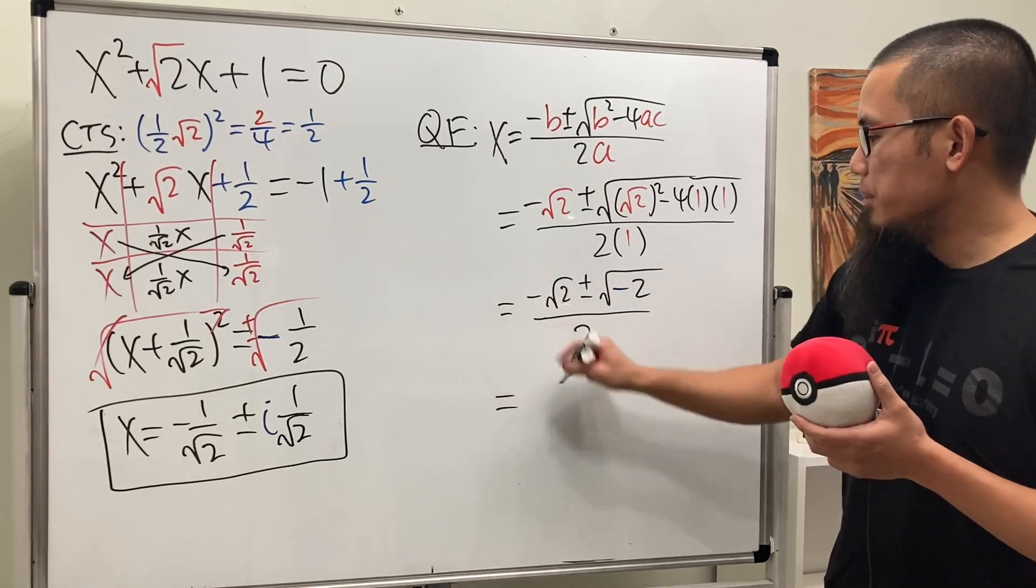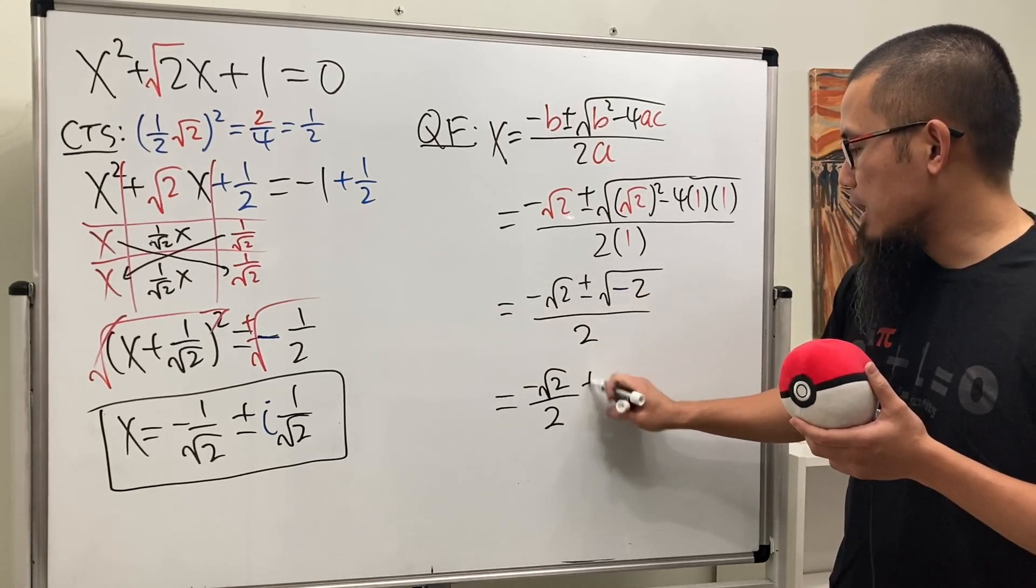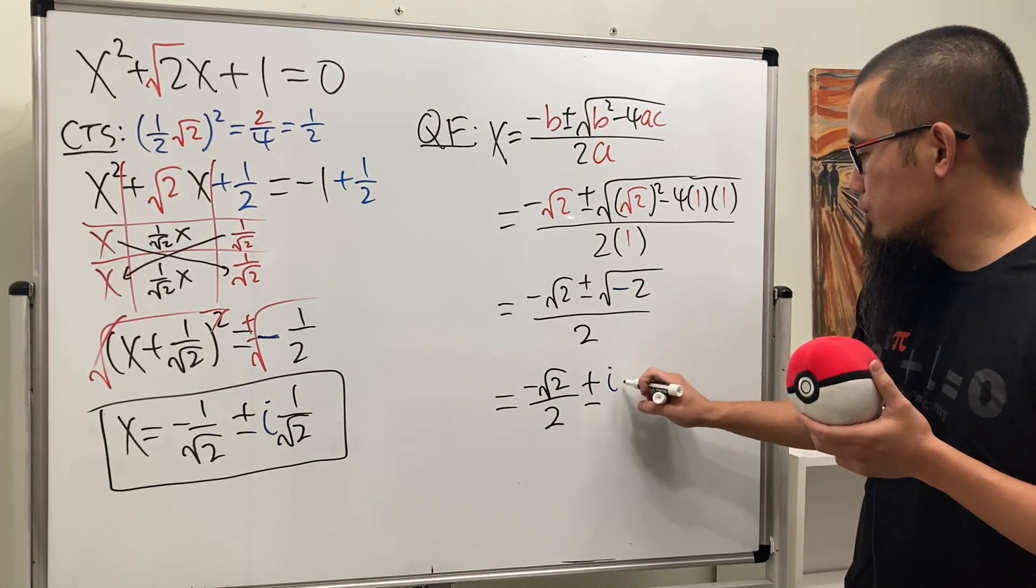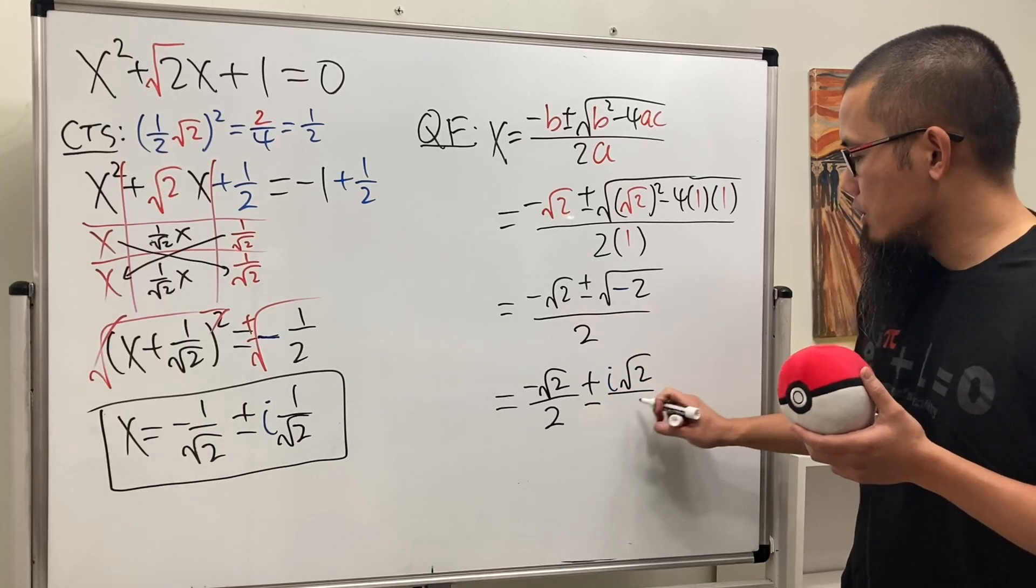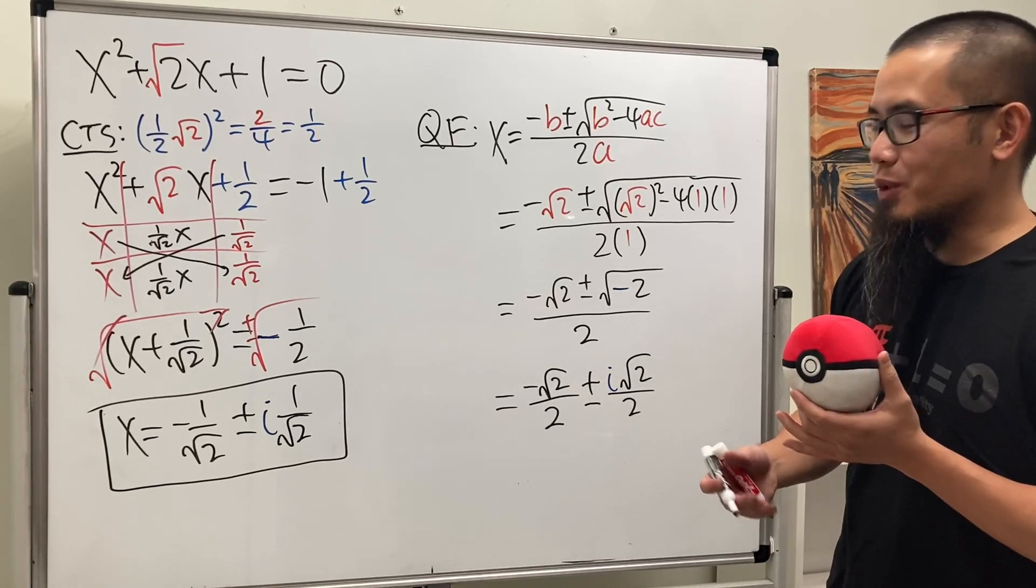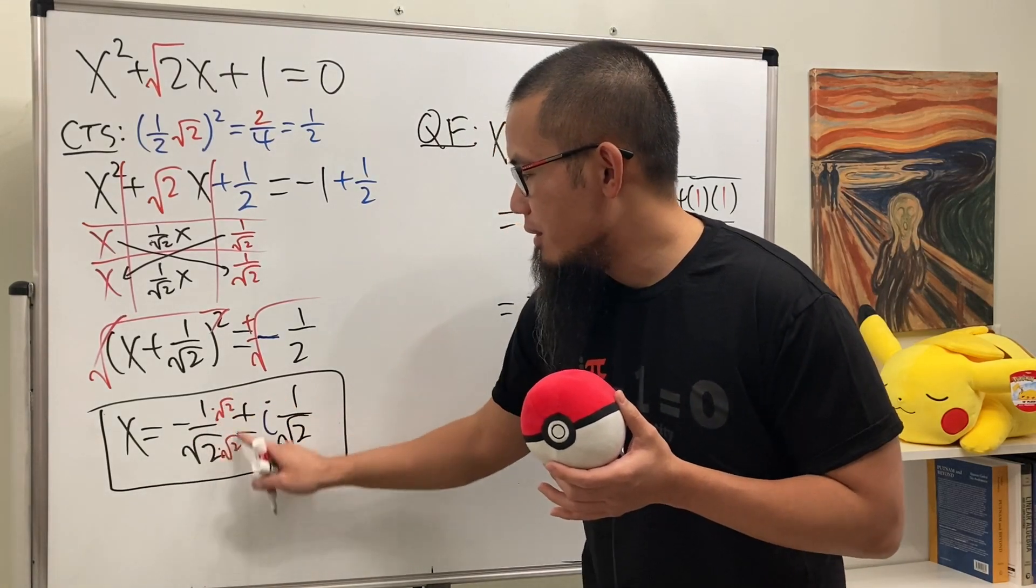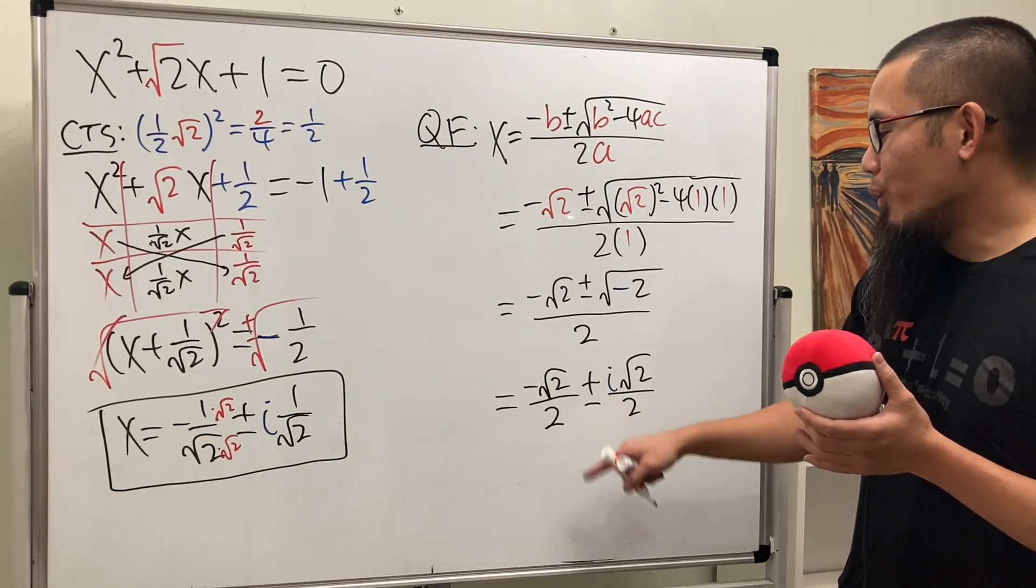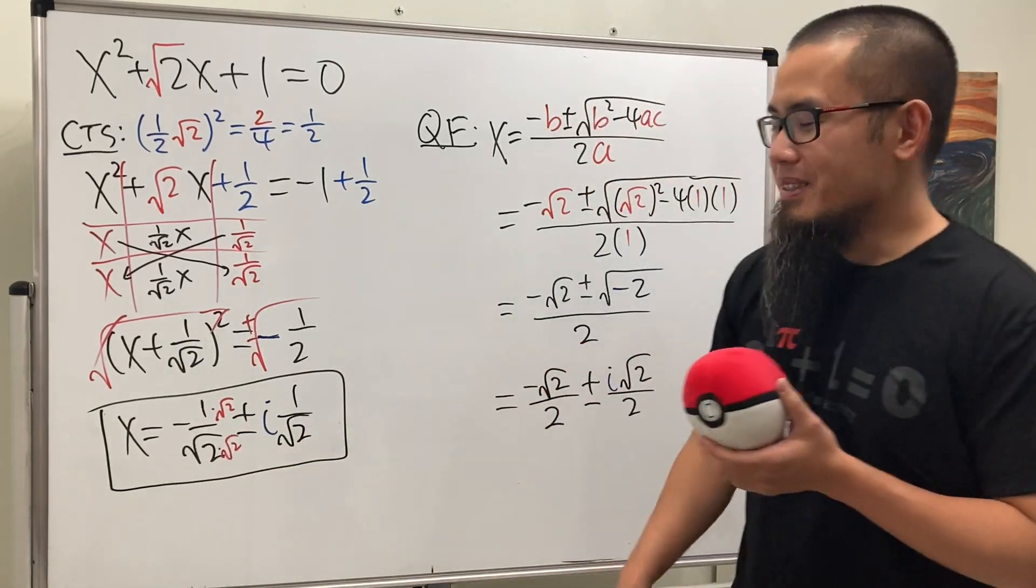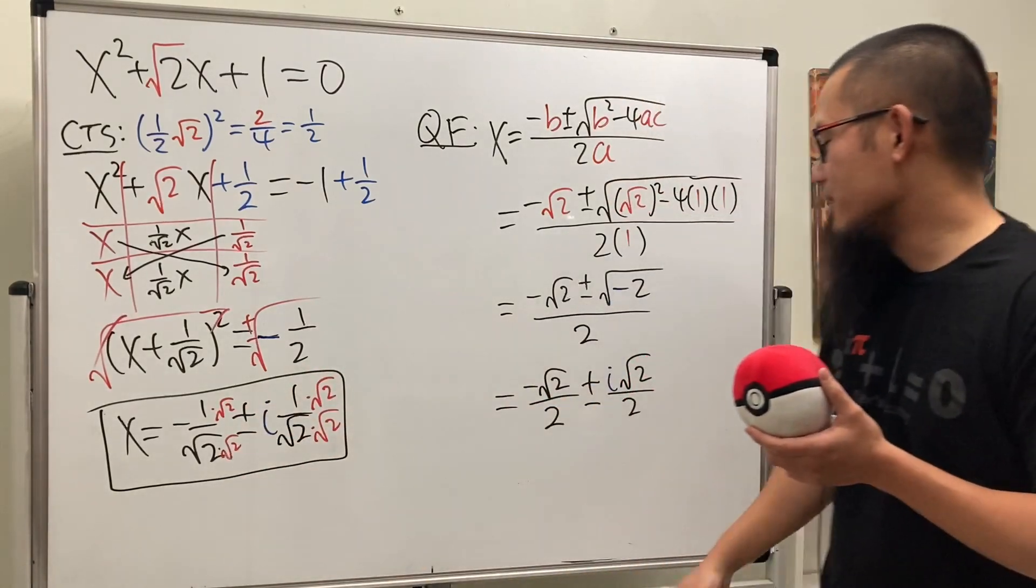So this right here is going to be, let me write this down, negative square root of 2. And let me put this down as over 2. And let me bring down the plus or minus. And then here, I'm going to put down the i. And then we have the square root of 2 over 2. And in fact, it really depends on how you like to rationalize your square root. If you multiply the top and bottom by square root of 2 right here, then you see this is the same as that.